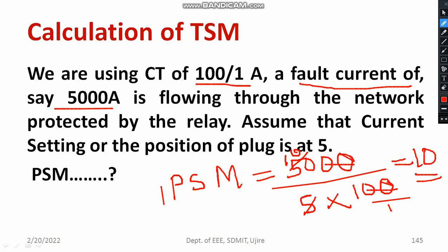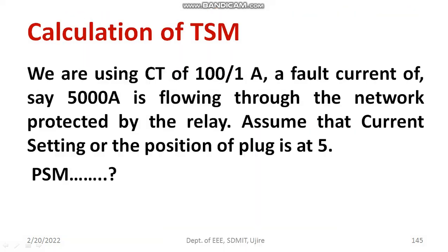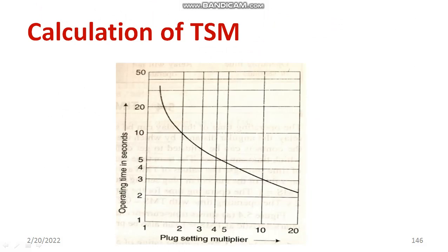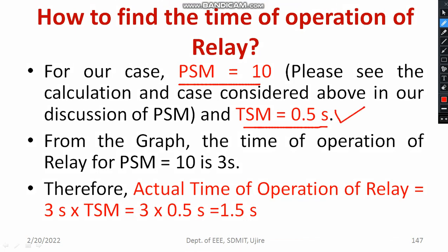Now that I have PSM equal to 10, let us refer to the graph of operating time versus PSM. Whenever PSM is equal to 10, look at the graph — the operating time is almost 3 seconds. So from the graph, operating time corresponding to PSM of 10 is equal to 3 seconds. Extrapolate that point, and this point will be at 3 seconds. Operating time is obviously 3 seconds. Now, the time setting multiplier I already set as 0.5.